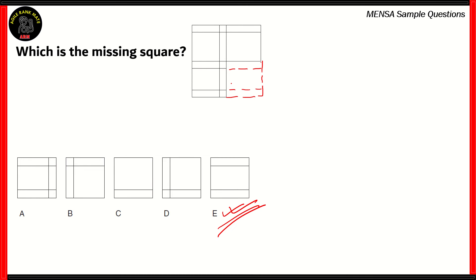The other options are incorrect because either they do not have two horizontal lines, or they include a vertical line. Between the top left and bottom left squares, vertical lines are continued from end to end, but on the right side there is no vertical line. So the answer must not have any vertical line. The only plausible options were C and E, but in C there is no line at the top, making it incorrect. Therefore, square E is the right answer.